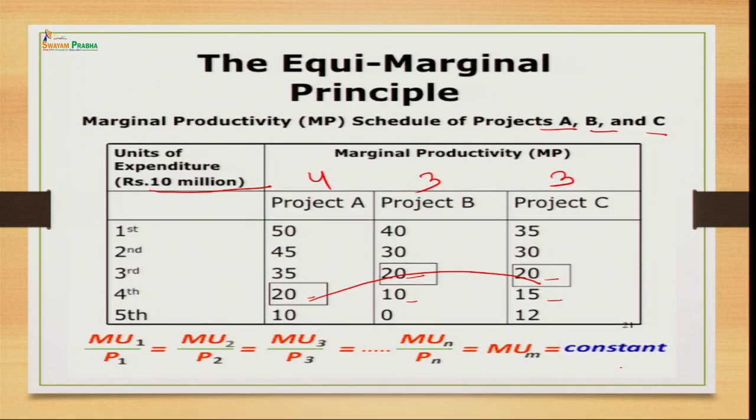We can also express this with a formula: the marginal productivity of resource in use 1 should equal the marginal productivity of resource in use 2, and so on — MU at the end remains constant. The equi-marginal principle is applicable for both producers and consumers. For producers, it's about marginal productivity; for consumers, it's about marginal utility — the satisfaction derived from consuming different commodities and allocating income so that we derive equal marginal utility from each. This will be further discussed in future lectures on cardinal and ordinal utility.